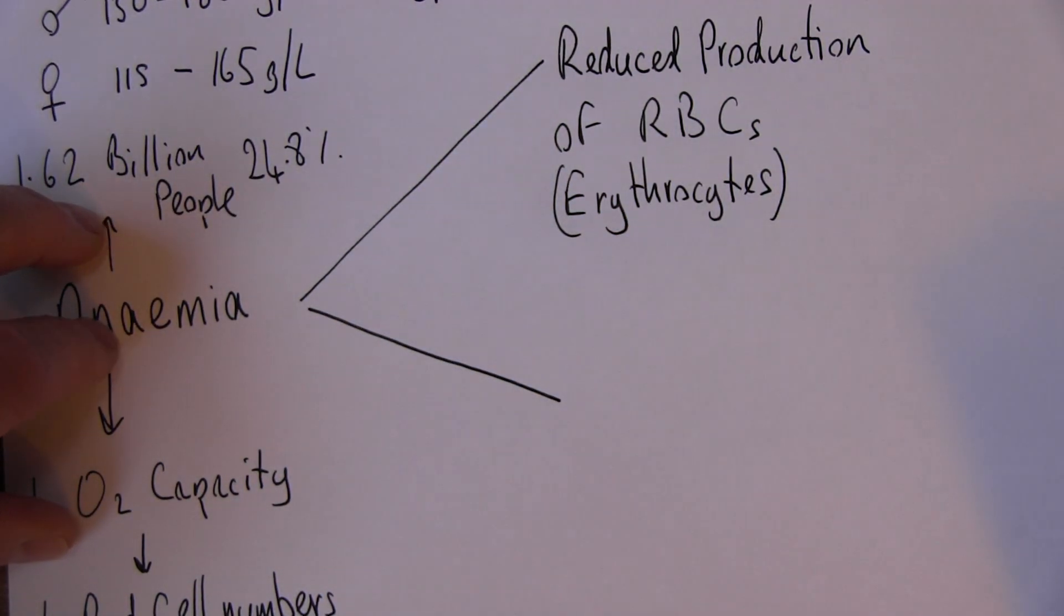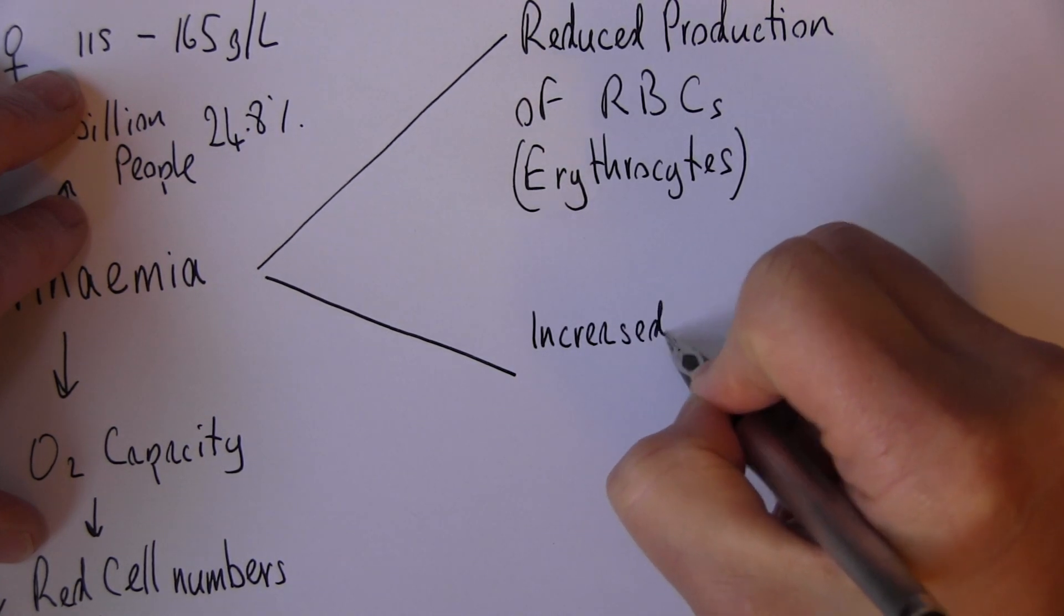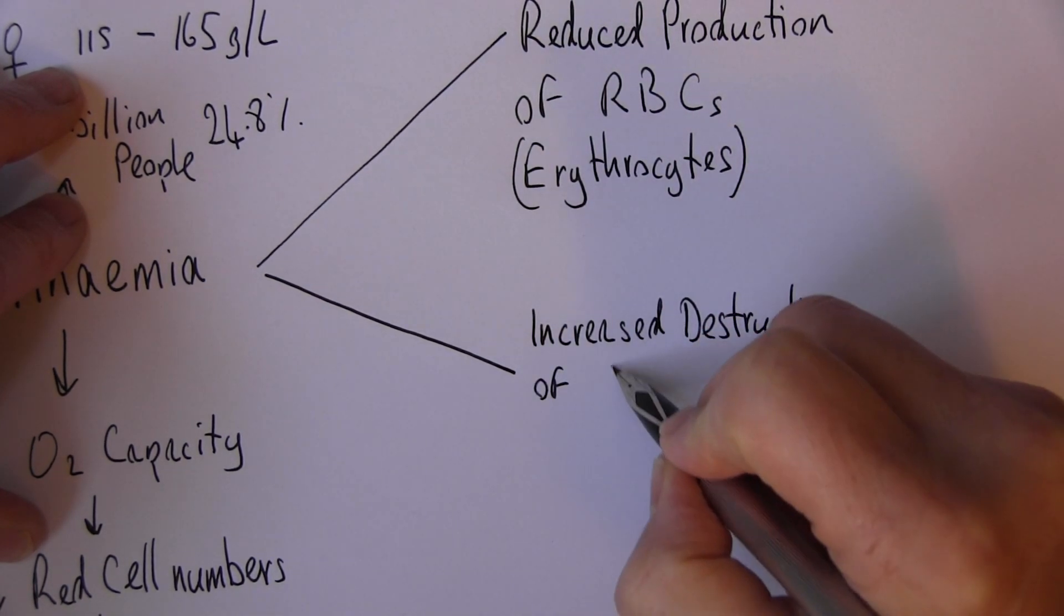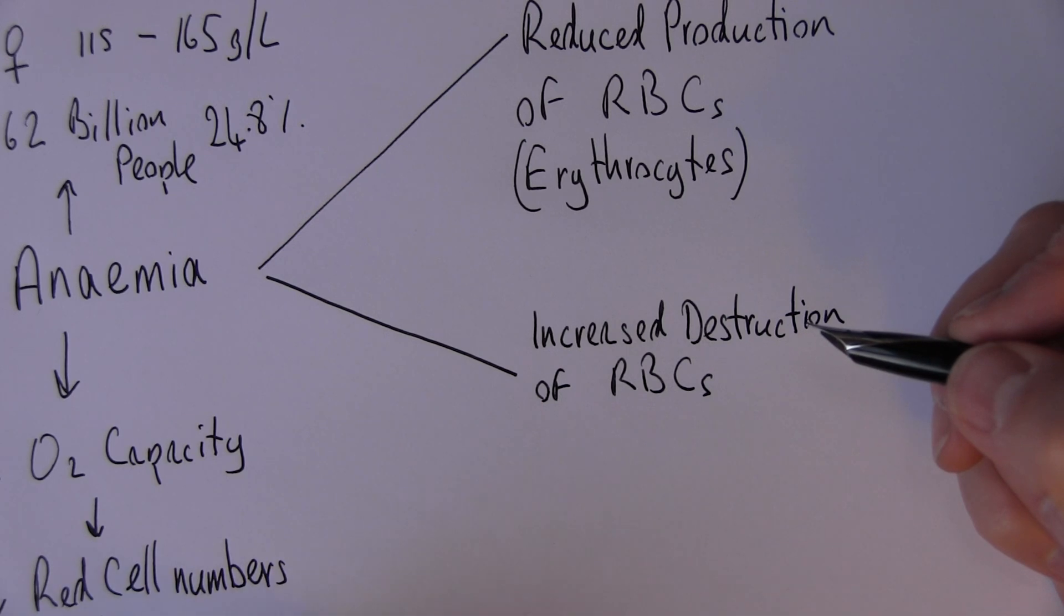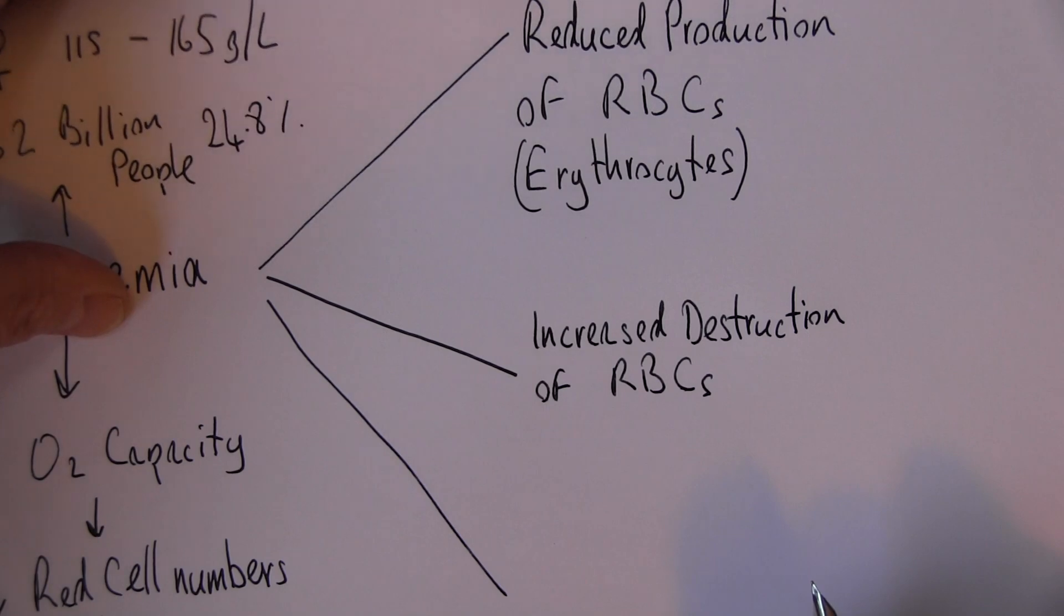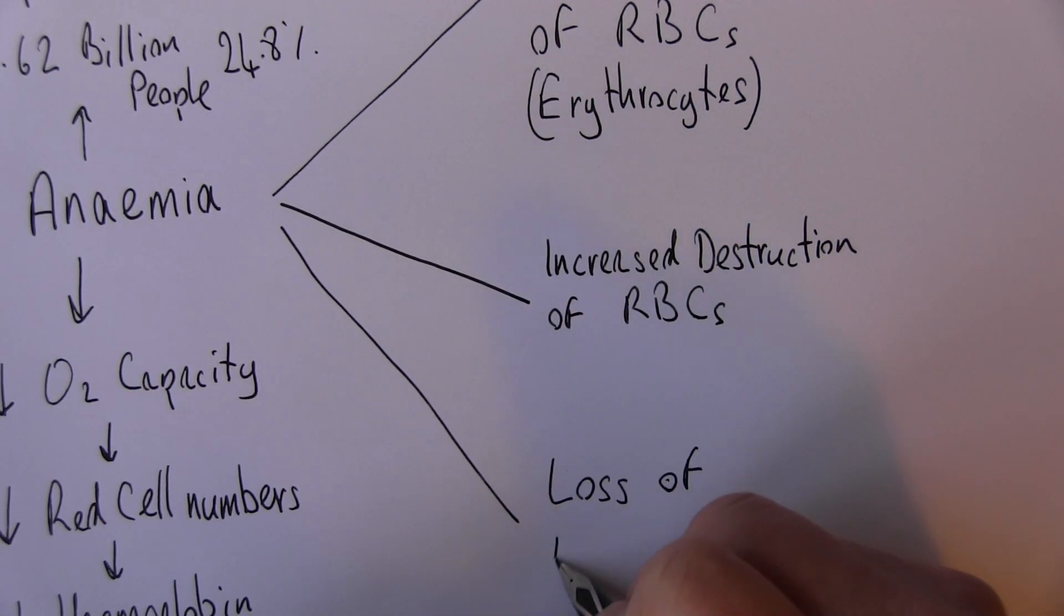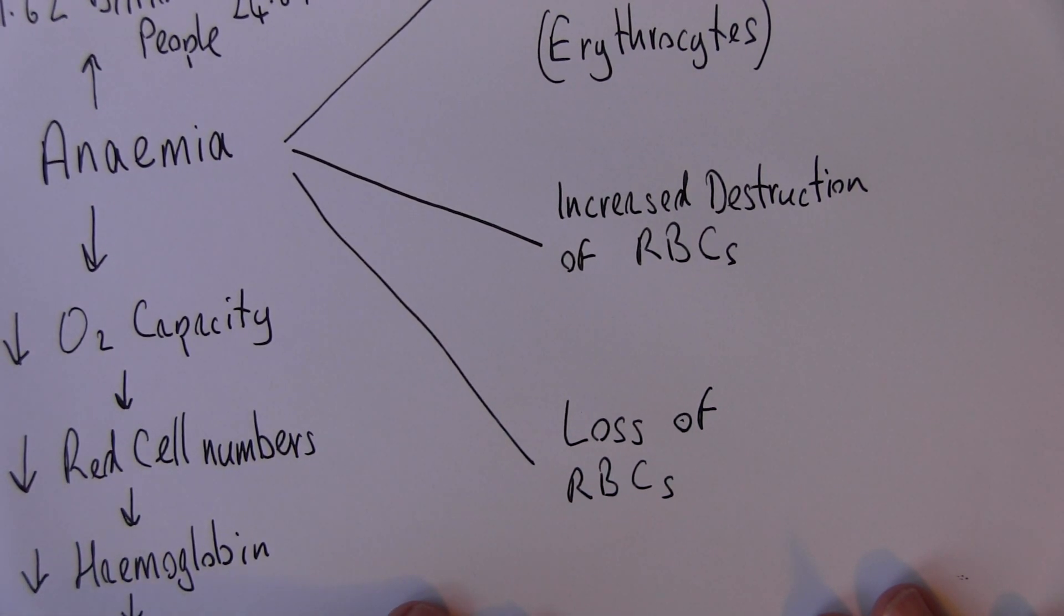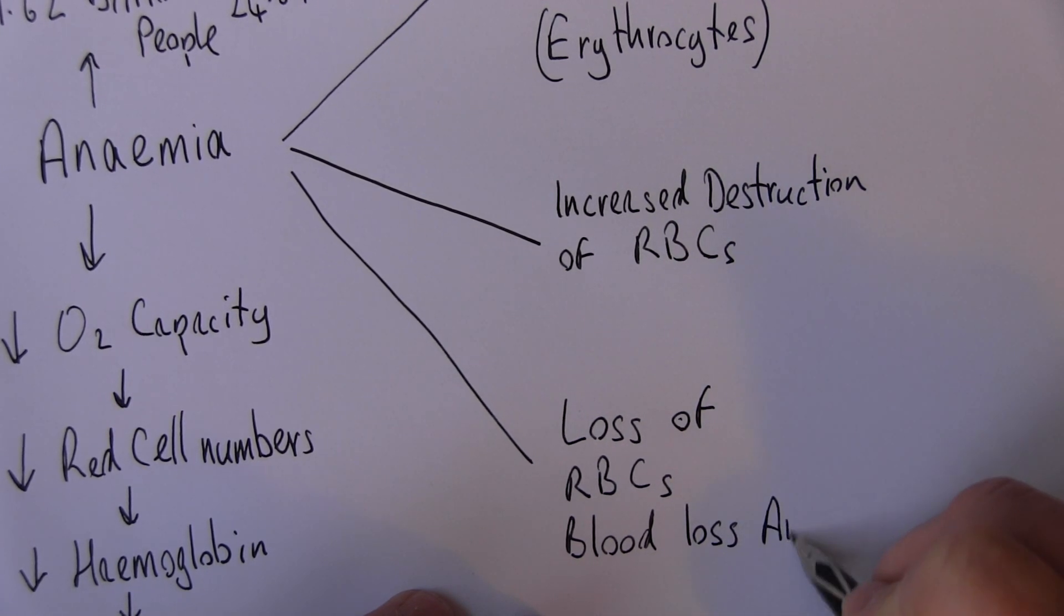Another group of causes are associated with increased destruction of red blood cells once they're made. So too many red blood cells are destroyed after being made. And thirdly, they can be simply lost. Loss of red blood cells. They can simply bleed out of the circulatory system for many different reasons, and this is called blood loss anemia.